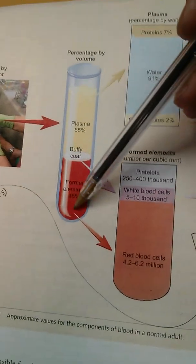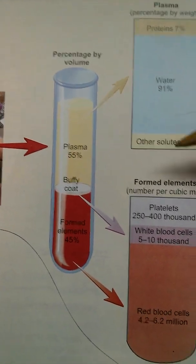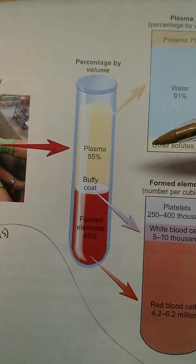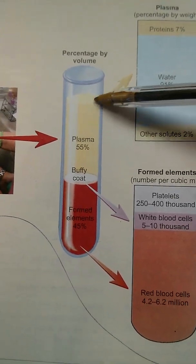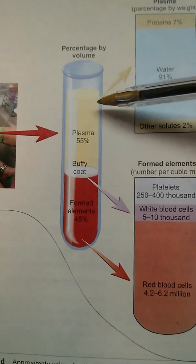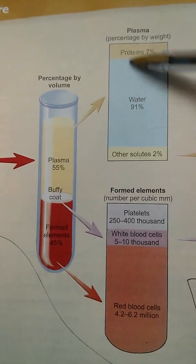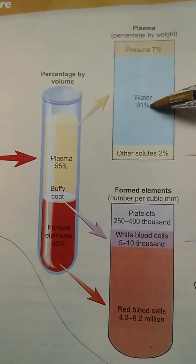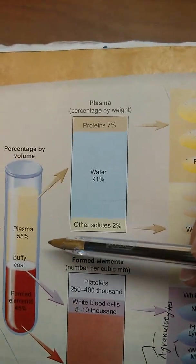If someone were to get a blood sample drawn and put it in a test tube, and you could somehow separate the contents of your blood — kind of like looking at all the different ingredients in a salad bowl — it would be separated like this. More than half, about 55% of what your blood is actually made of, is called plasma. Plasma is made up of mostly water — 91%. So more than half of your blood is actually water, which is why it's so important to stay hydrated.